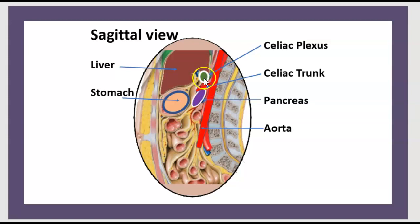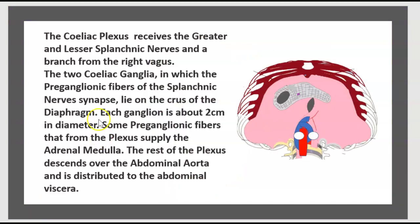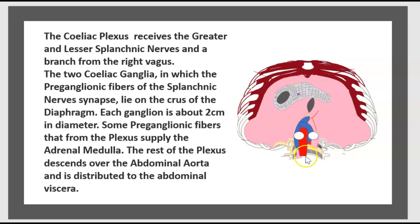The celiac plexus is located between the celiac trunk and the liver. The celiac plexus receives the greater and lesser splanchnic nerves and a branch from the right vagus. The two celiac ganglia, shown in white, are where the pre-ganglionic fibers of the splanchnic nerve synapse. They lie at the level of the crura of the diaphragm — the right crus and the left crus shown in blue. This is the aorta.